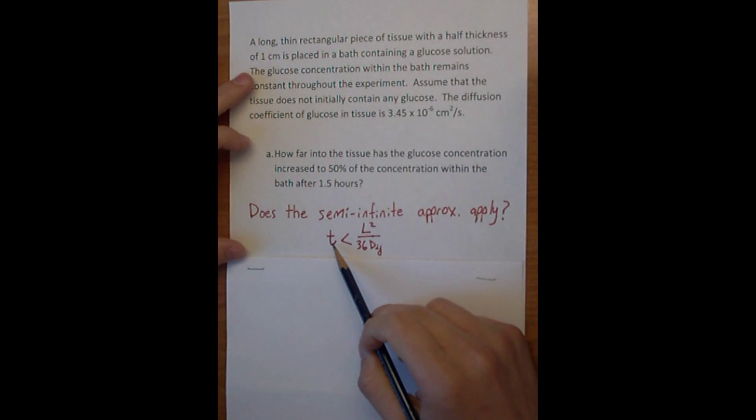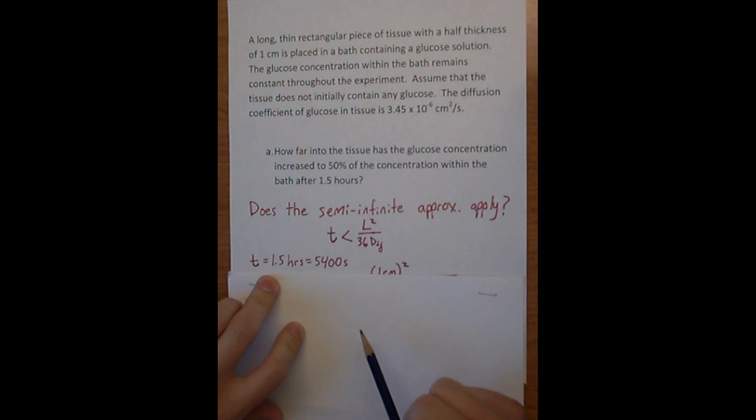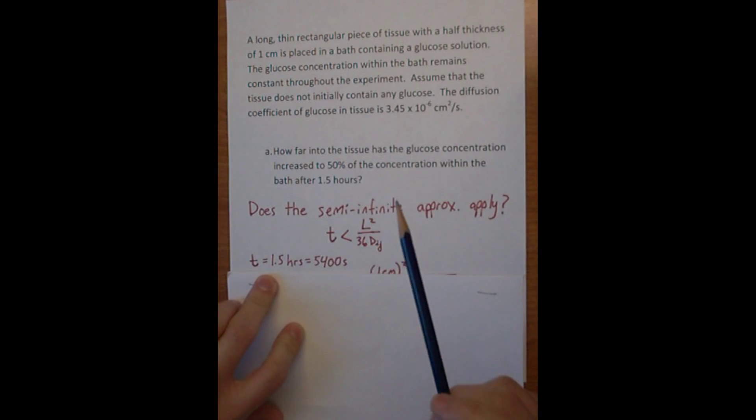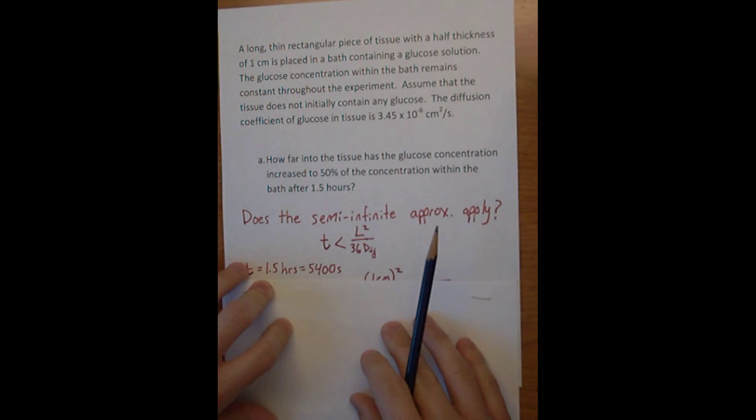The time was one and a half hours, which equals 5,400 seconds. L squared is the half thickness, which is one centimeter, and D_ij is the diffusion coefficient. So it's 5,400 seconds less than your half thickness times 36 divided by 36 D_ij.